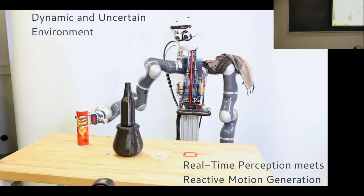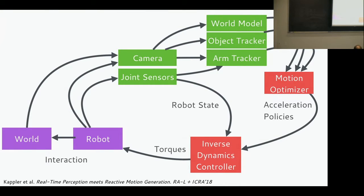The way we did this was to take real-time perception methods developed at MPI and marry them with reactive motion generation methods. Everything is hooked up in loops running at different frequencies: a low-level control loop runs at kilohertz, camera data comes in at 30 Hz, and the motion optimizer runs at 200 Hz. These all have to be fused together.